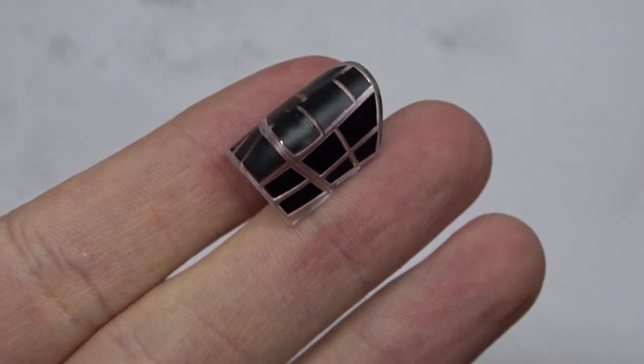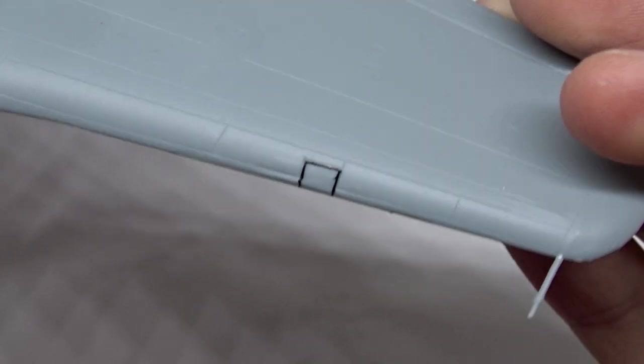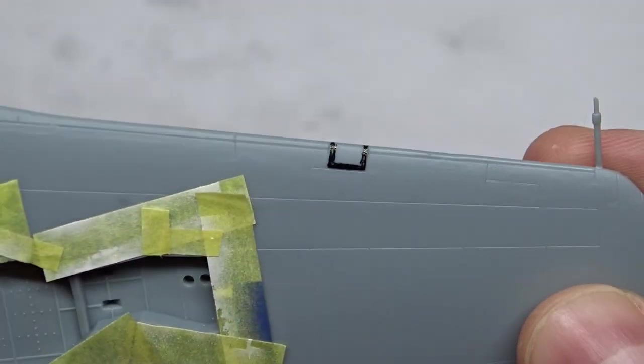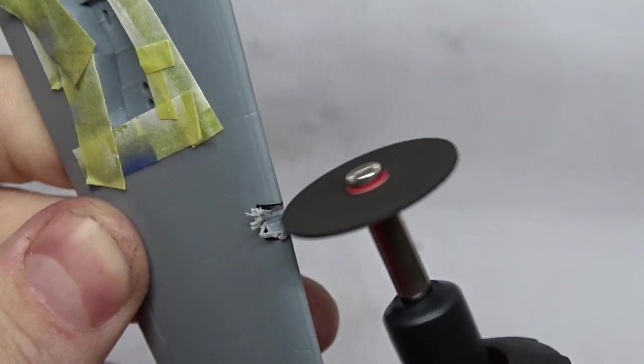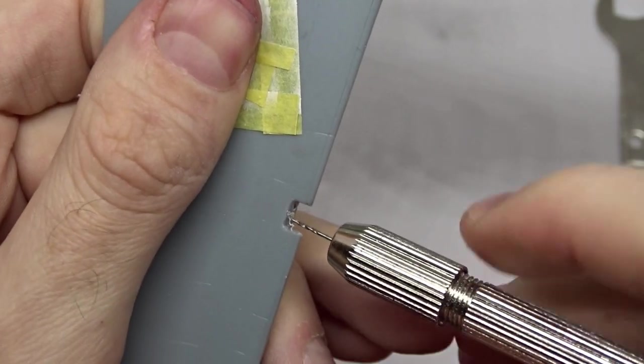One last thing that bugged me was the absence of a landing light, therefore I used my rotary tool to remove some material here. Then I drilled two small holes for the lamps.